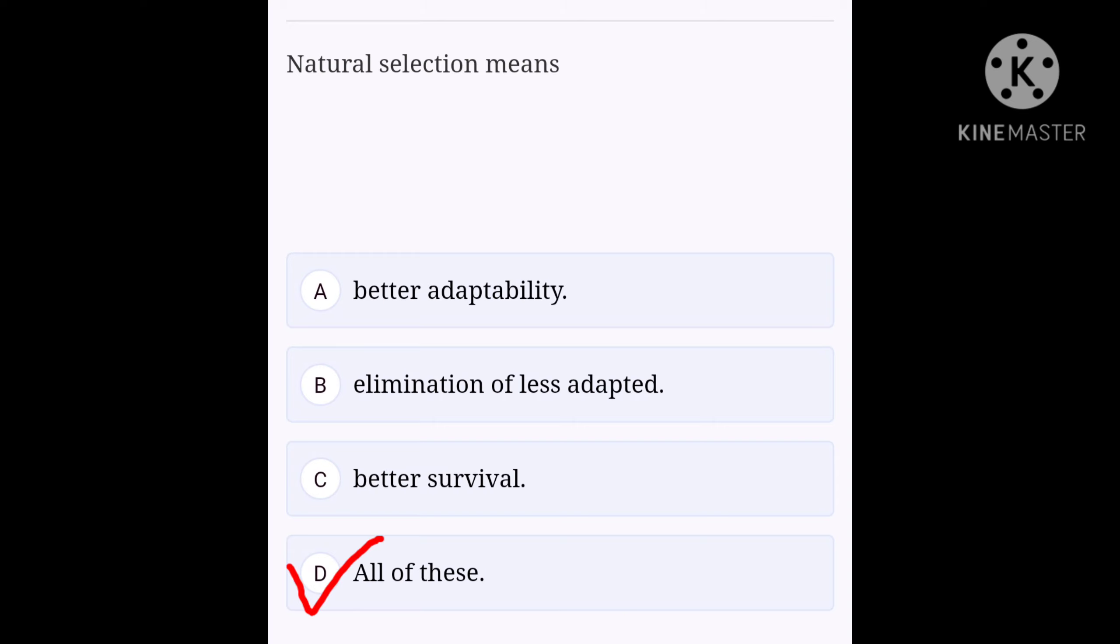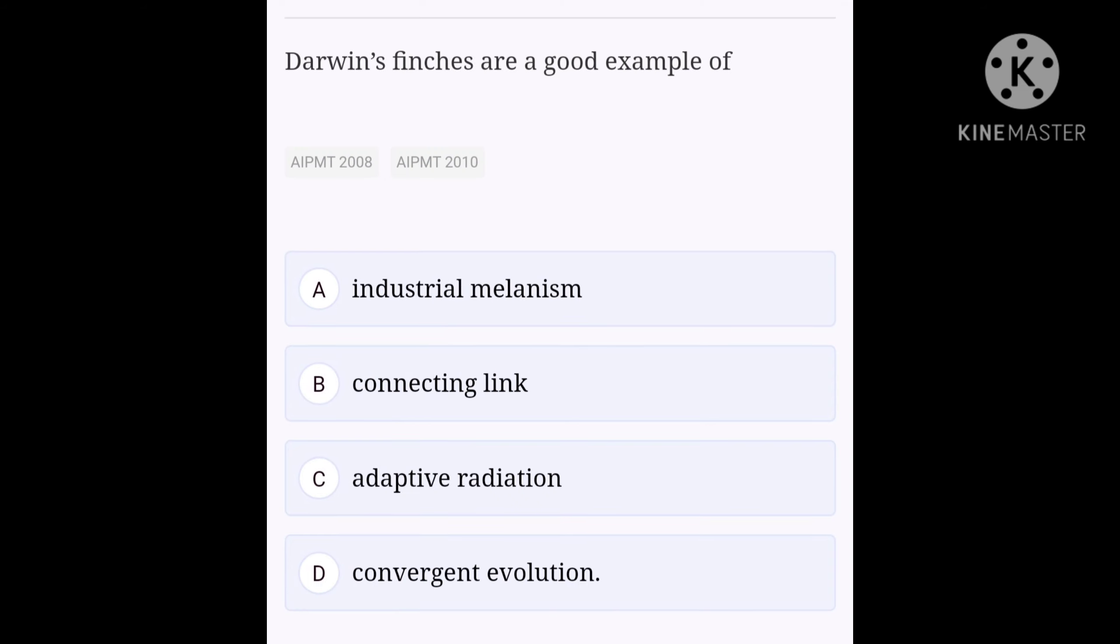Next question. Darwin's finches are a good example of option A: industrial melanism, option B: connecting link, option C: adaptive radiation, option D: convergent evolution. Darwin's finches show adaptive radiation. This radiation occurred in response to various food resources available. These finches feed on insects, tree buds, seeds, cactus, etc. Carrion or dead bodies, no finches feed on them. So the correct answer for this question is C, adaptive radiation.